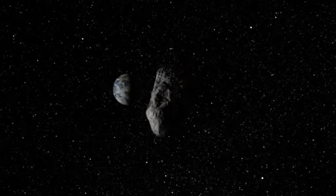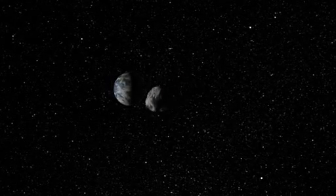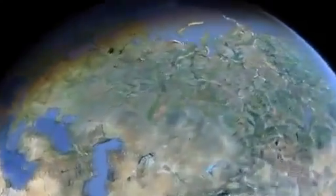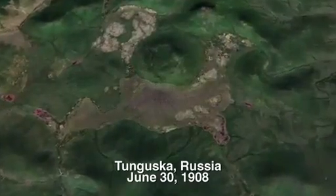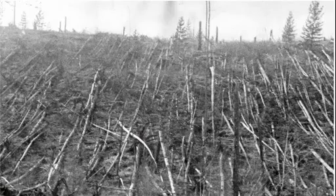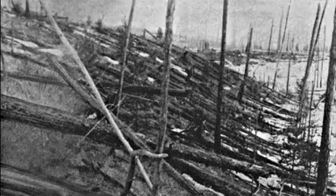An object the size of DA-14 actually impacted Earth on June 30th, 1908, the so-called Tunguska event. An object of about 30 or 40 meters came down into Earth's atmosphere and exploded, leveling trees for 820 square miles.